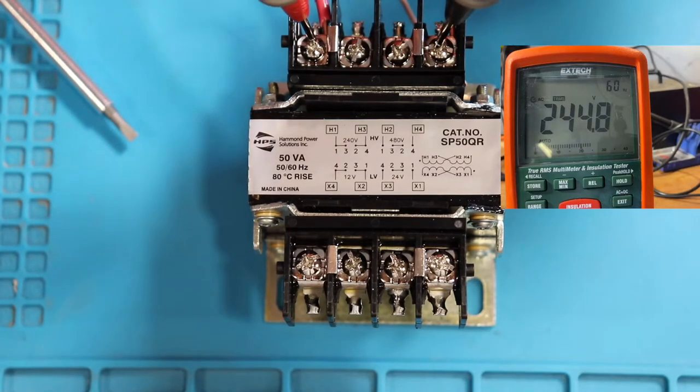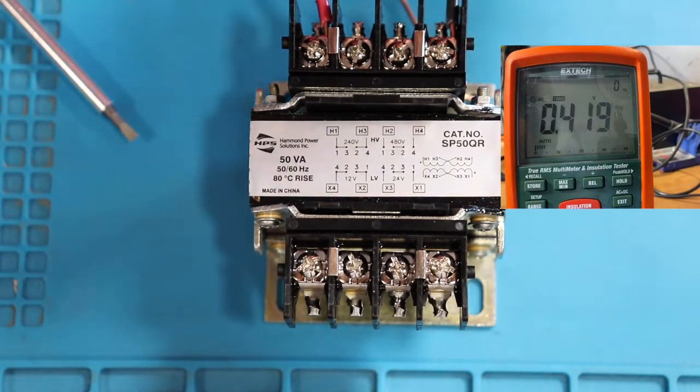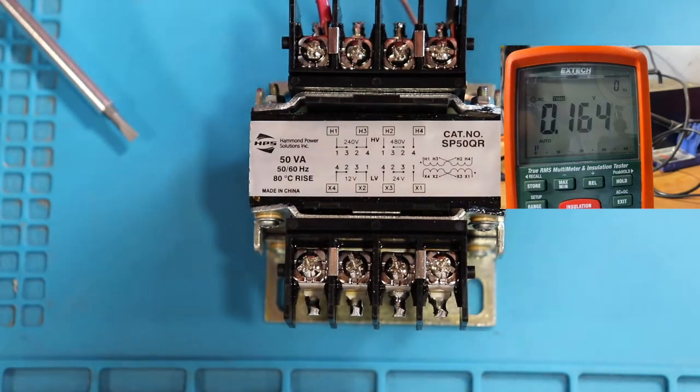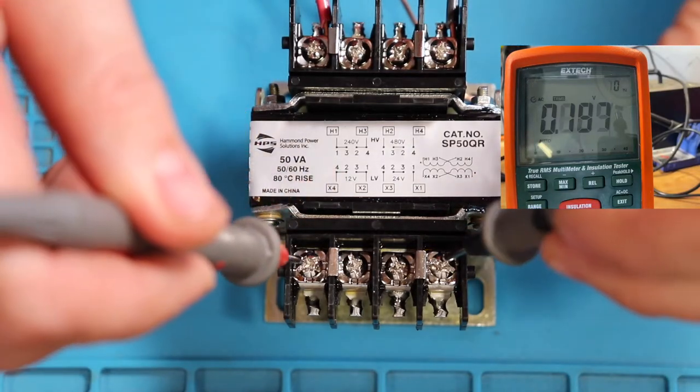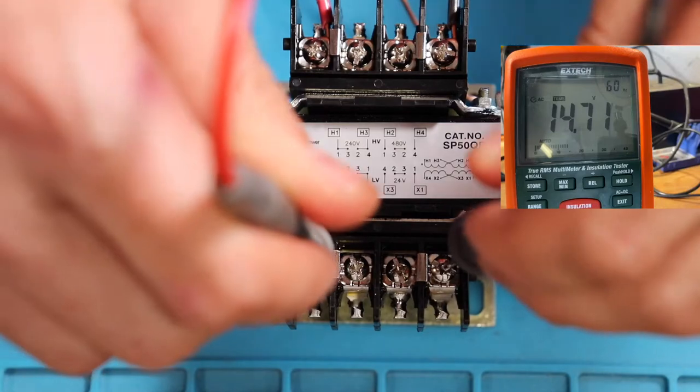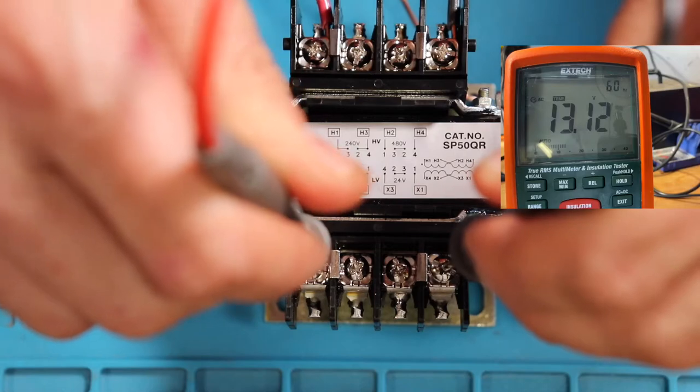We have 243.44 volts, which is good. Now on our secondary side, we should get around 12 volts at these two points. We got 13.12 volts, which is pretty good.